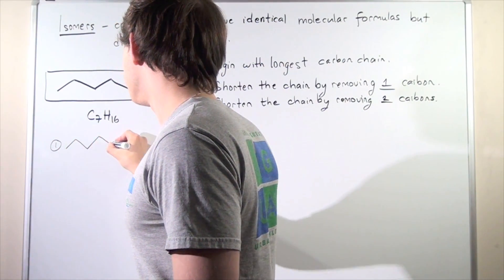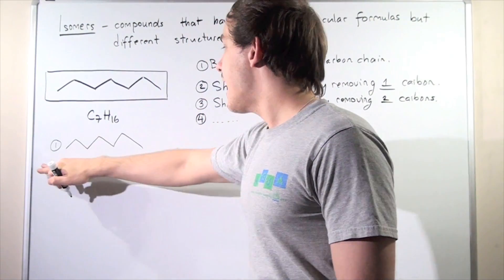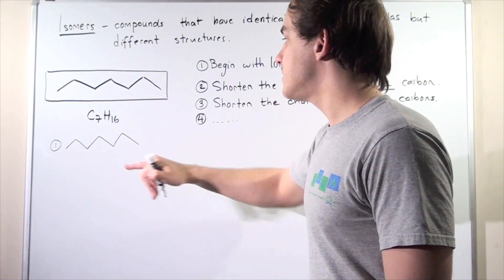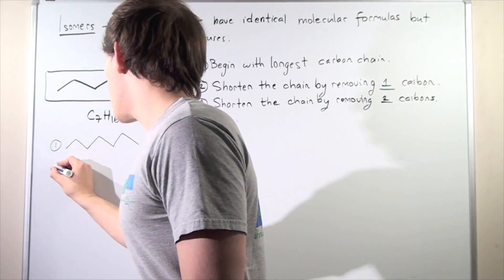So here we have our heptane and this is our first isomer. Let's go to step two.